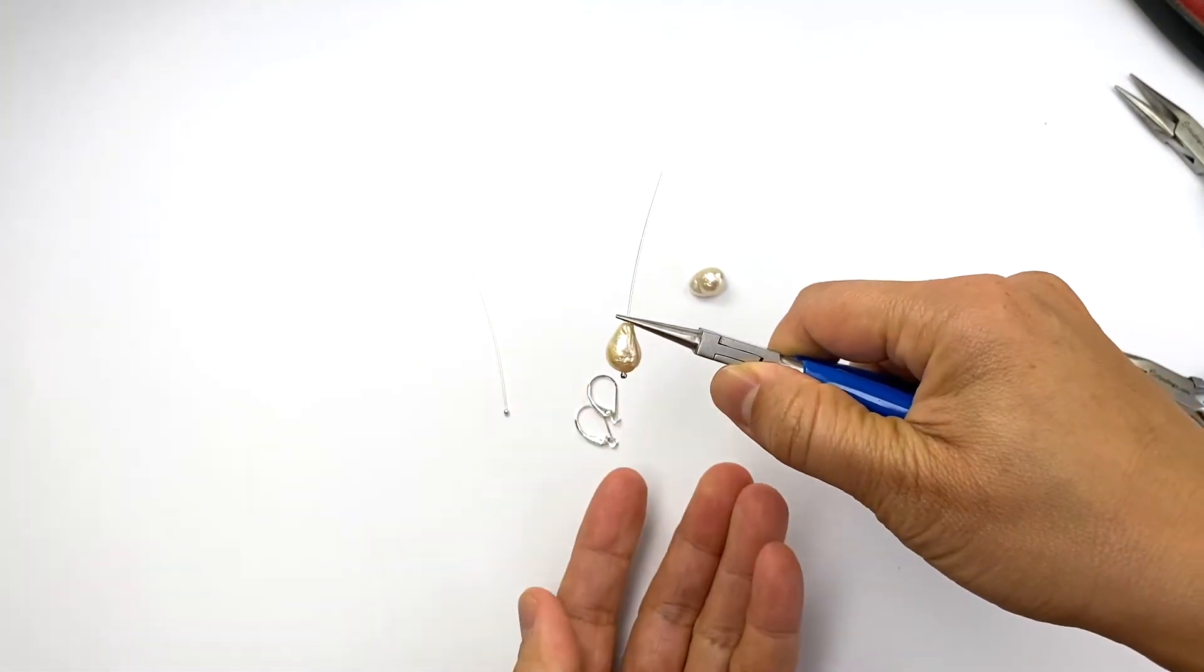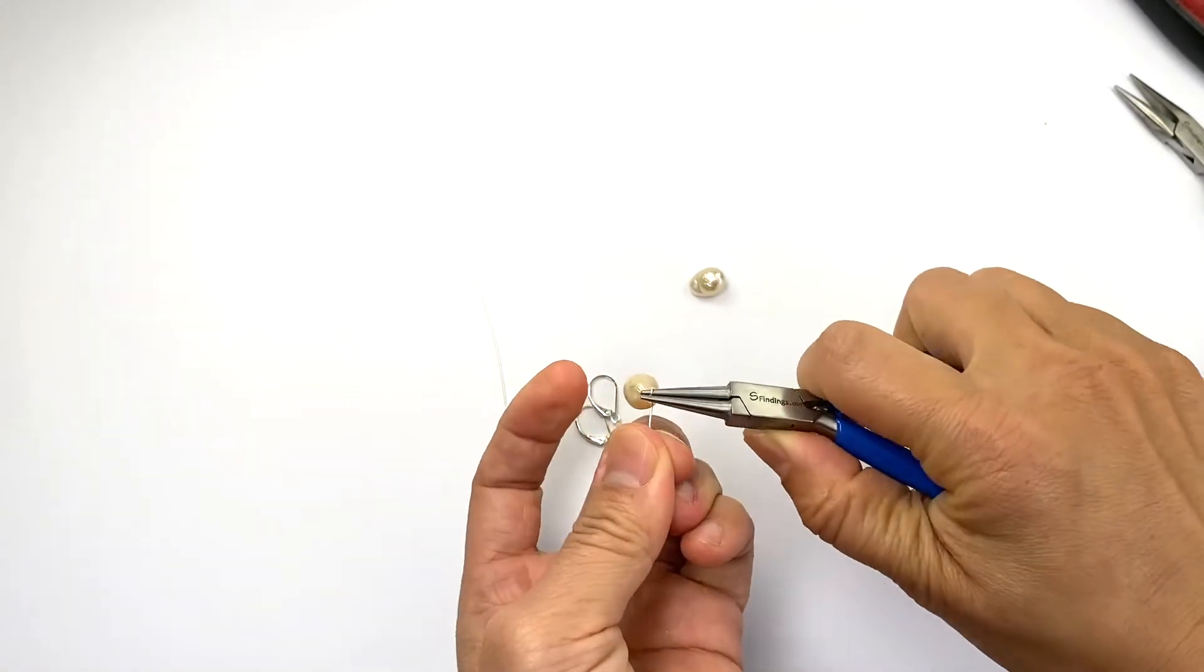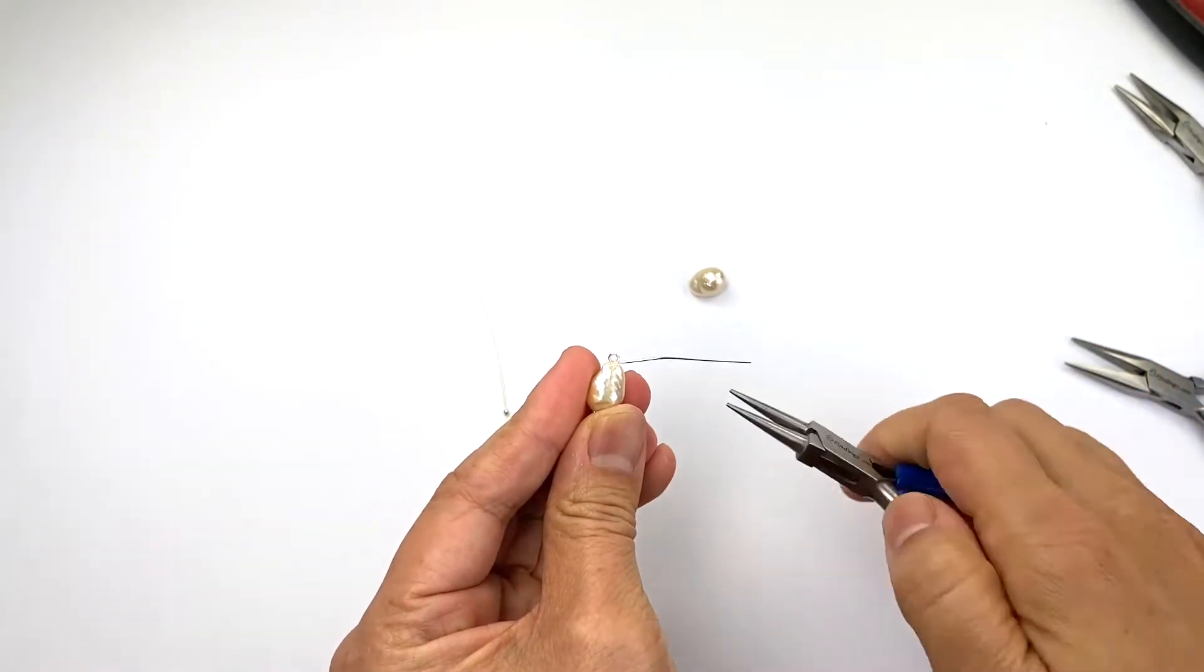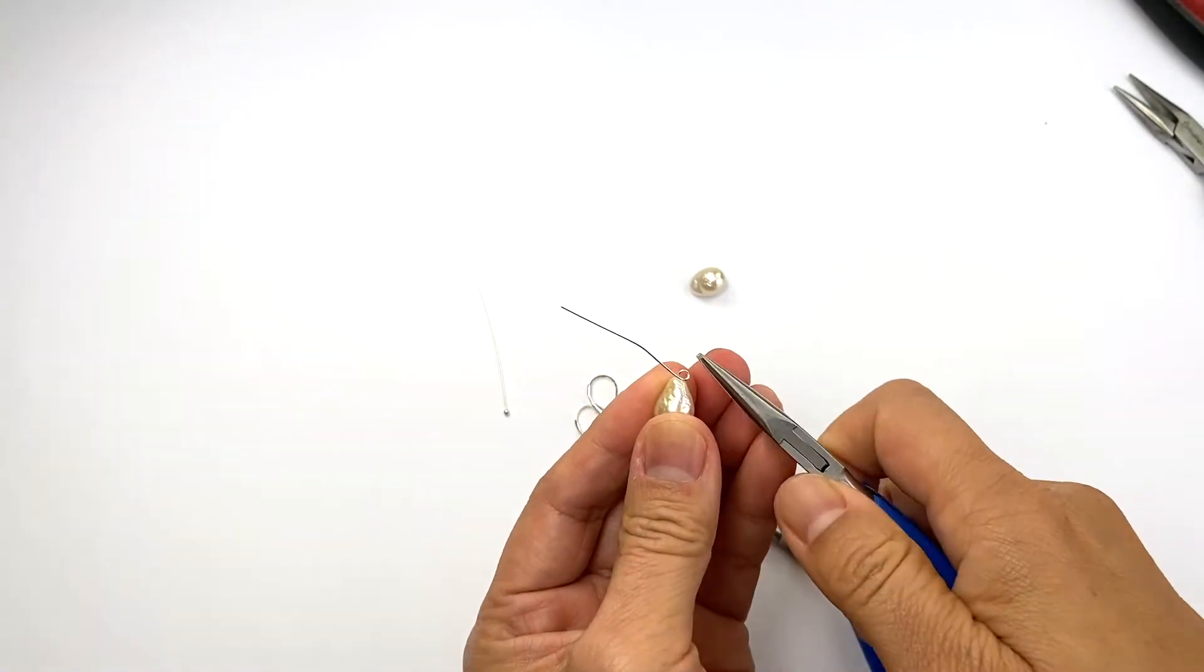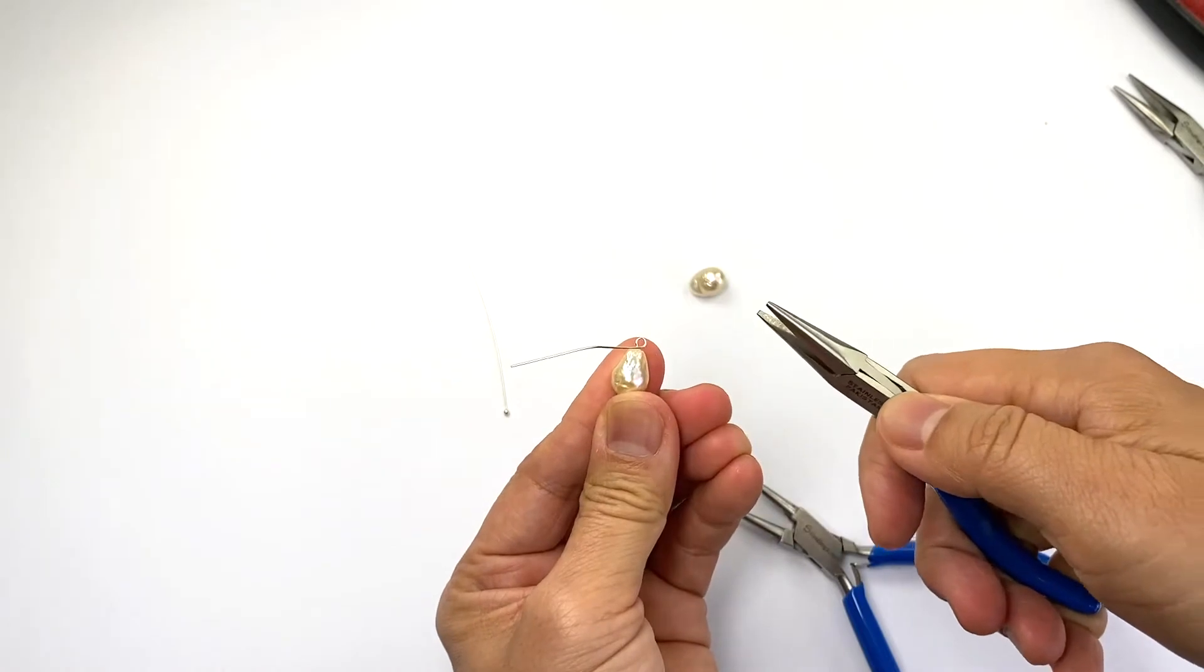Using a pair of round nose pliers that helps you make a loop, hold it like this and make a full loop like this and adjust so that it is straight and there's room for your wire wrap.